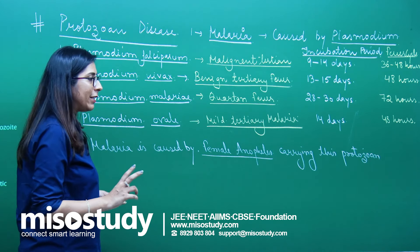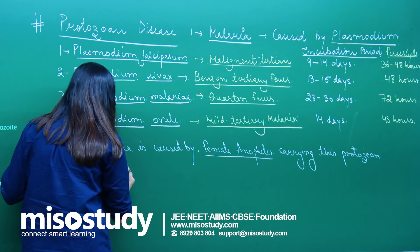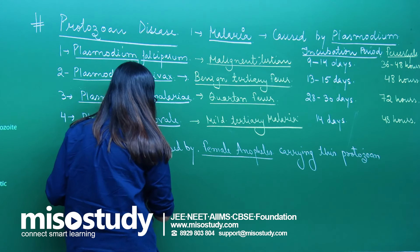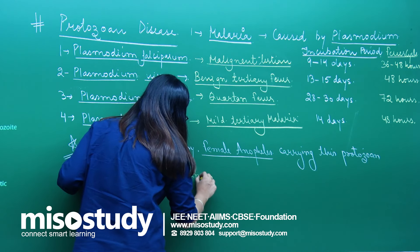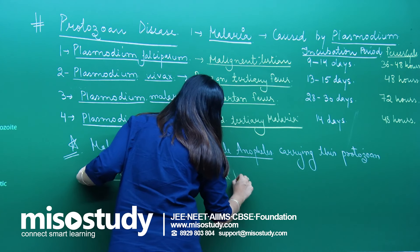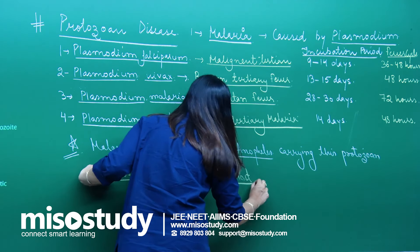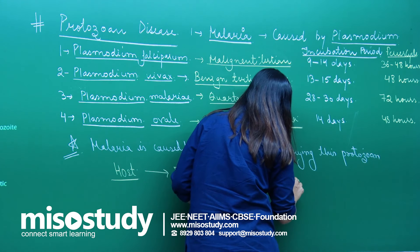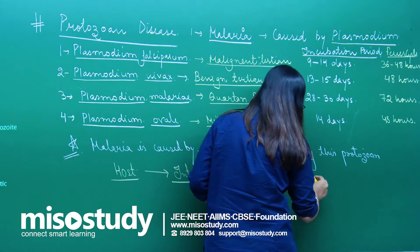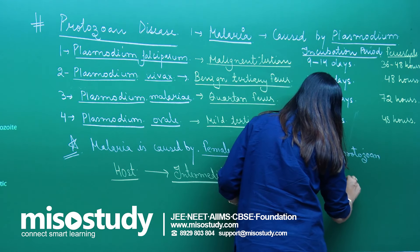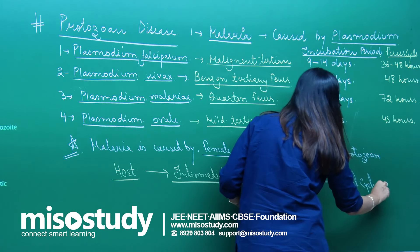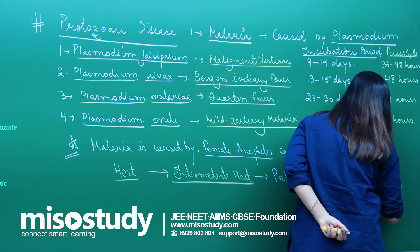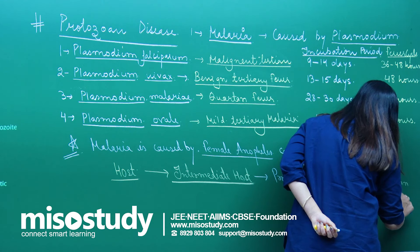As far as malaria is concerned, there are two different hosts. The first is termed the intermediate host. The intermediate host is that host in which this protozoan completes an asexual cycle. The protozoan shows an asexual cycle — they reproduce by an asexual method — and for this the host is human or other primates.